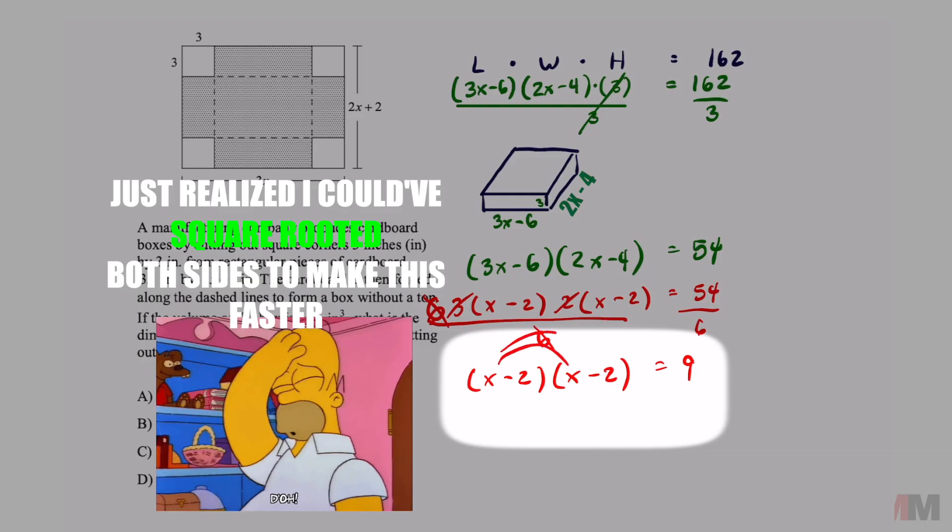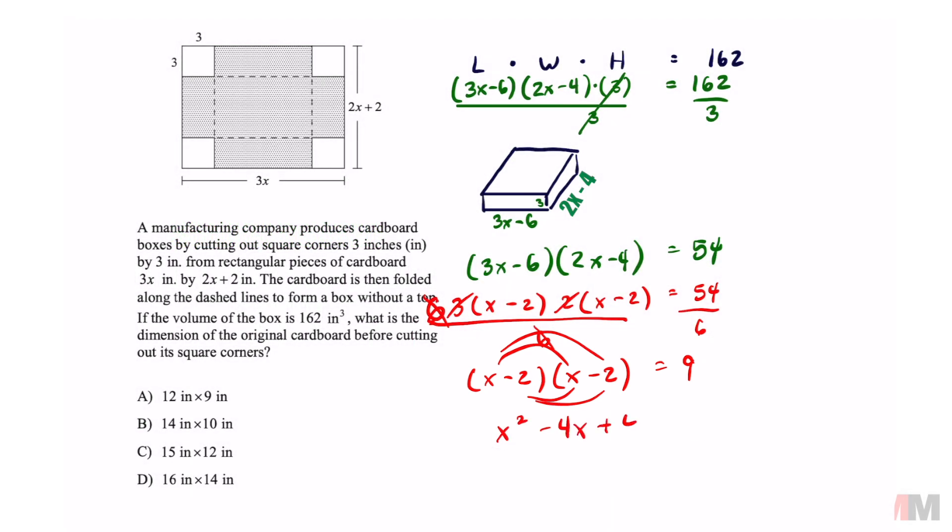I'm going to have to distribute this out. That's going to be x squared minus 4x plus 4 equals 9. And now I can subtract 9 to both sides to get x squared minus 4x minus 5 equals 0.